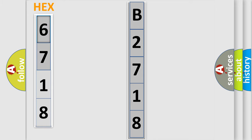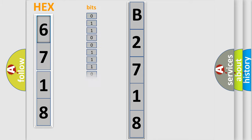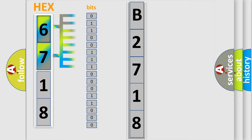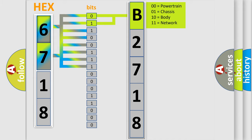The error code is split into two bytes consisting of 16 bits. One bit is the basic unit that each computer works with. The bit has two logical states: zero, the low level, and one, the high level. By combining the first two bits, the basic character of the error code is expressed.